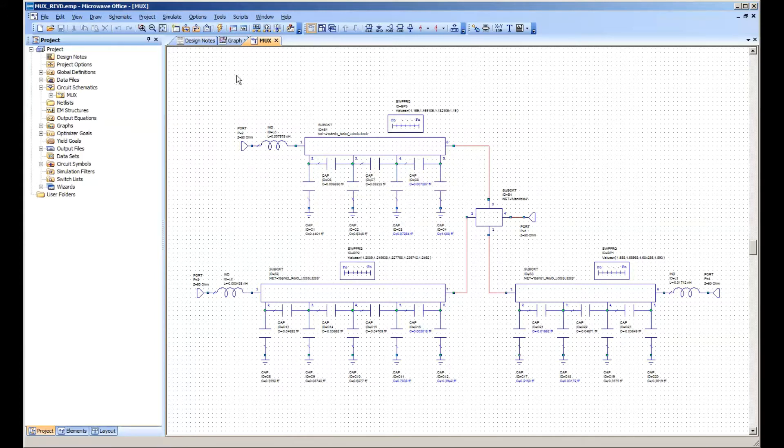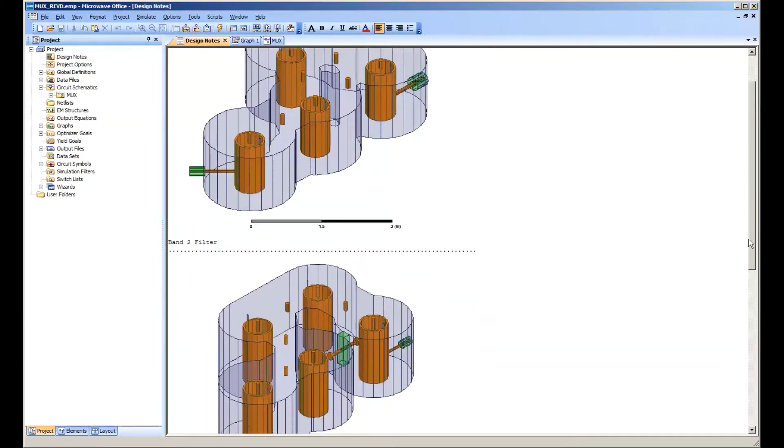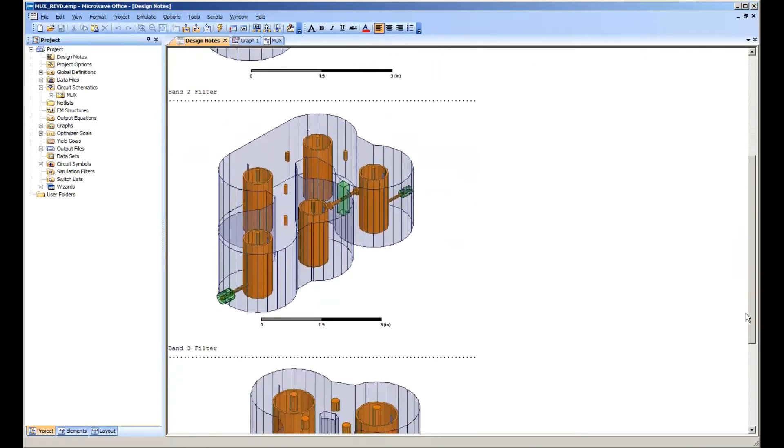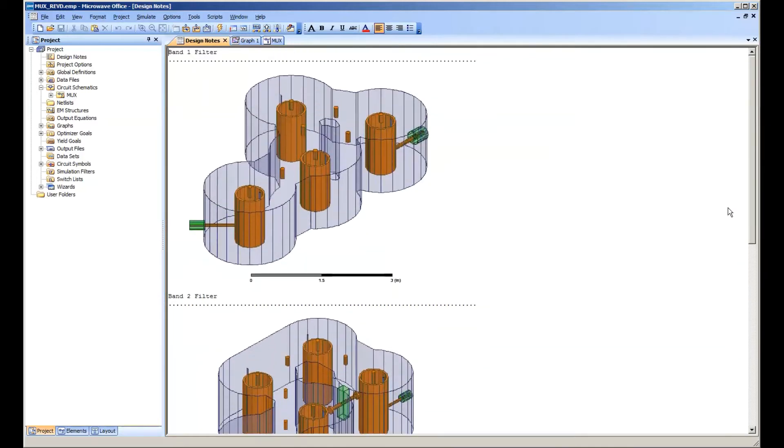And when we go to do the optimization, we'll just tell the optimizer to do something a little bit different. Here I have pictures of the three different filters. And again, each one is cross-coupled. They're relatively low order, but this is a useful triplexer.